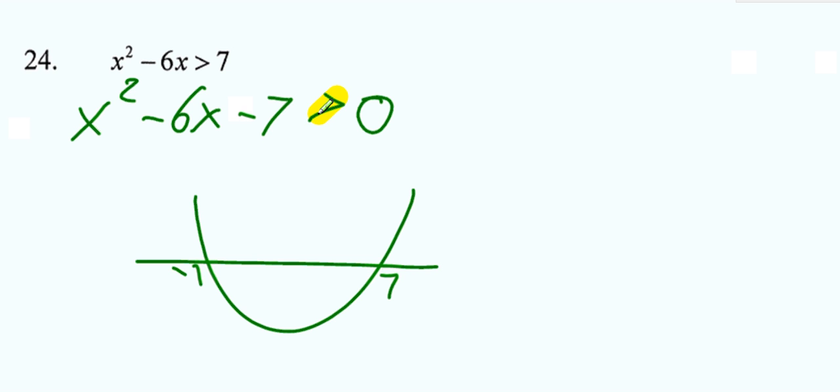The greater than tells us that we're looking above the x-axis, so that's here and there, including the arrows. So it's two intervals with the infinities because of the arrows.